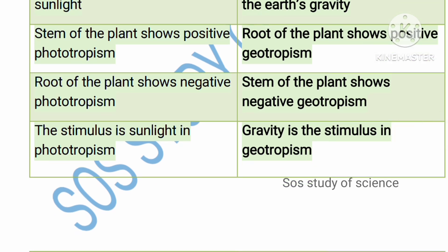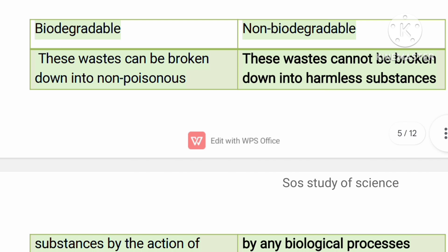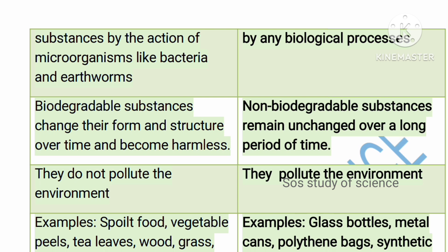Biodegradable wastes can be broken down into non-poisonous substances — they are good for the environment and do not add any harmful things to the soil. Non-biodegradable substances like plastic, glass, chemicals, and DDT cannot be broken down into harmless substances — they create harm to the environment. Biodegradable substances break down in the presence of microorganisms like bacteria and earthworms, but non-biodegradable substances cannot be decomposed by bacteria or earthworms.